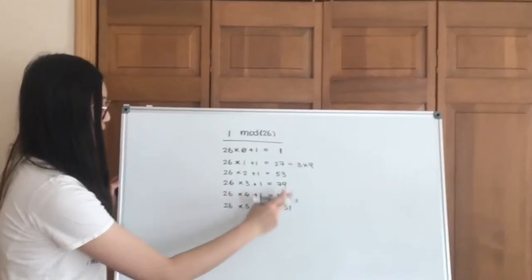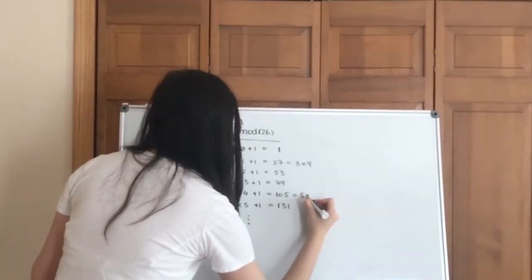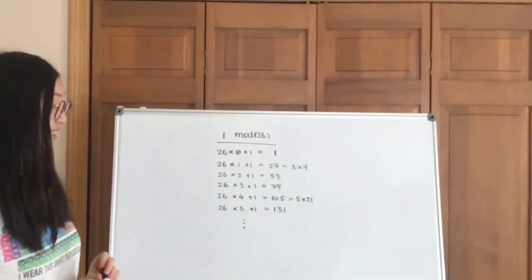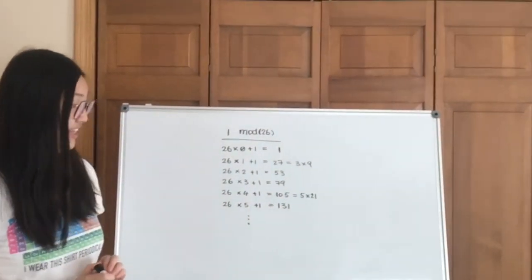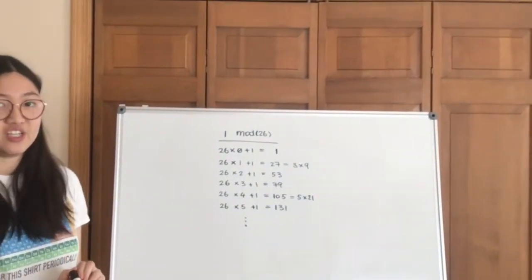Or let's take 105 as an example. We can split that into 5 and 21, both of them are smaller than 26, and in this case, the product is 105, which means that they are also inverses to each other.